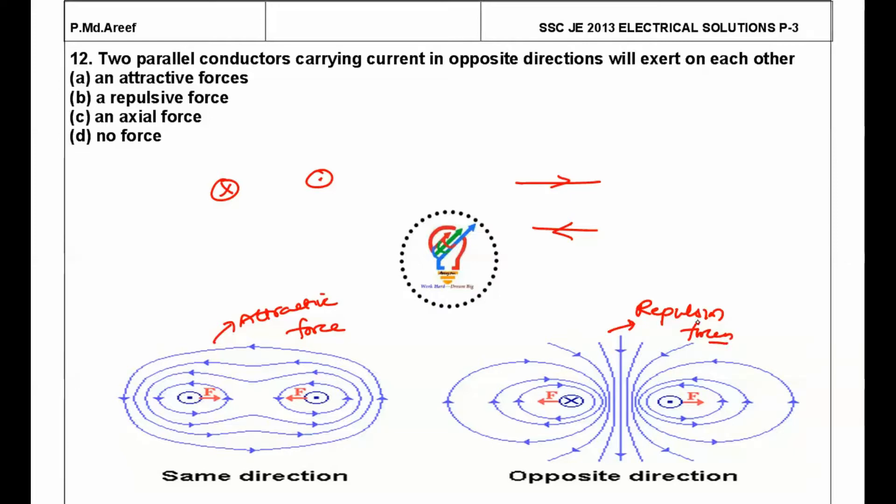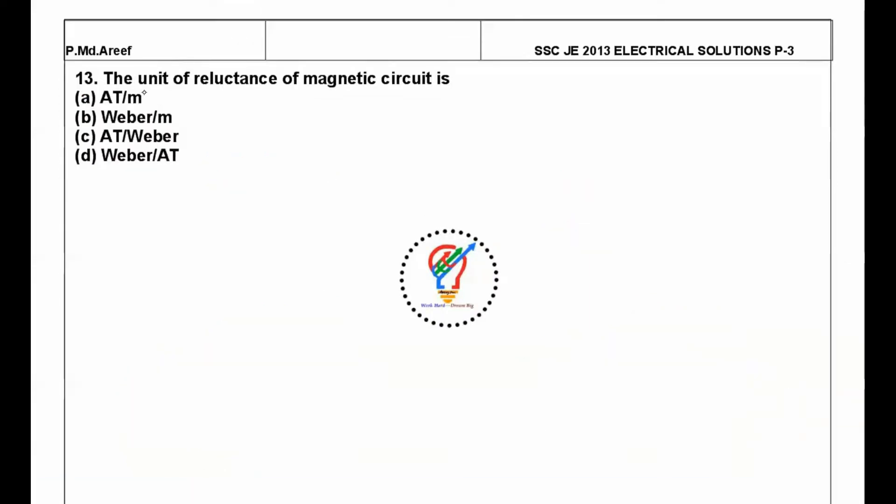Next question: the unit of reluctance of a magnetic circuit is? So reluctance is equal to mmf by flux, so mmf is nothing but NI by phi. So NI means ampere-turns divided by webers.